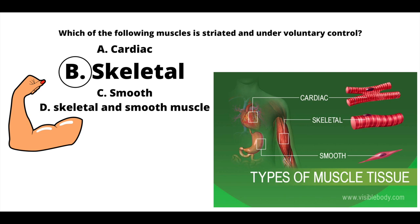Smooth muscle is not striated — hence the word 'smooth' — and is found in blood vessels, causing vasodilation and vasoconstriction. It's also found in the digestive tract; it is the reason we have peristalsis, which is the contraction of smooth muscle that moves food down the digestive tract. We also have it in the airway of our lungs. Cardiac muscle is found only in the heart. It is striated, but it is also involuntary — as is smooth muscle — meaning it acts on its own and we do not control its movement.